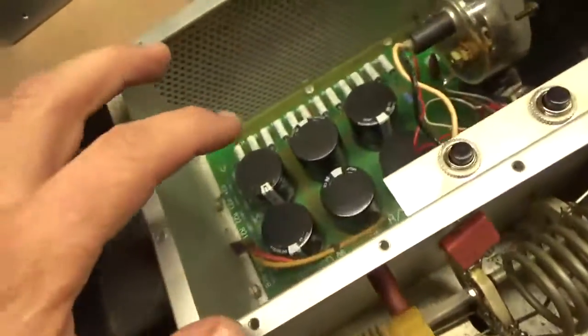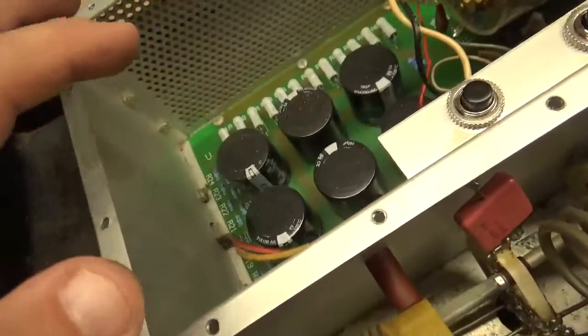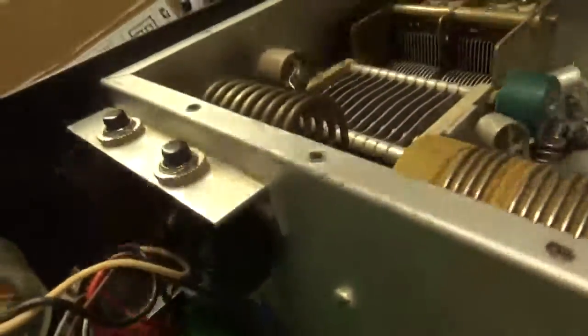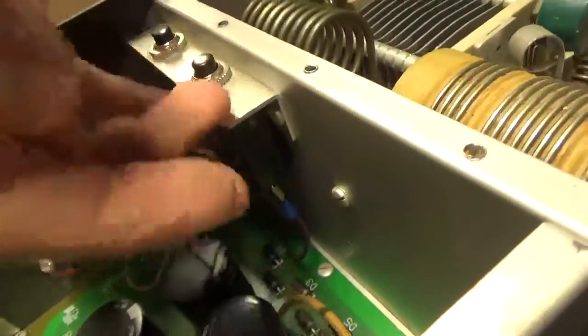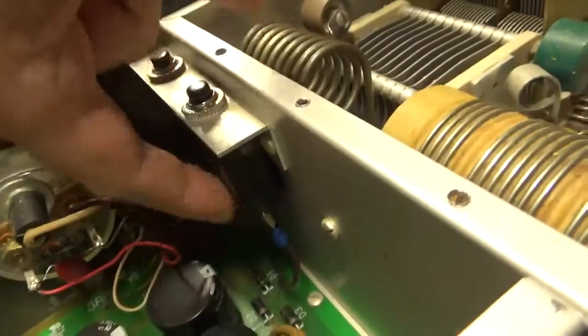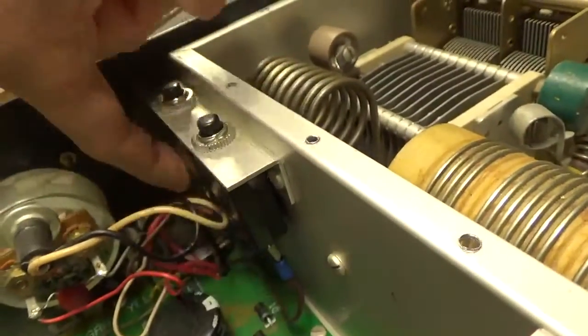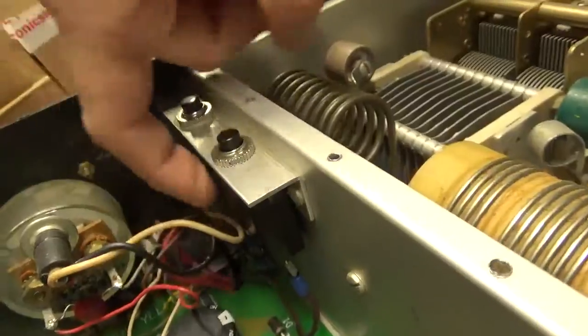Someone already put in the Harbach filter cap board, and that's all set. Someone actually used like spade connectors, and they're loose. So I'm going to clip those and I'll solder them like they should be, they should be soldered to these circuit breakers.